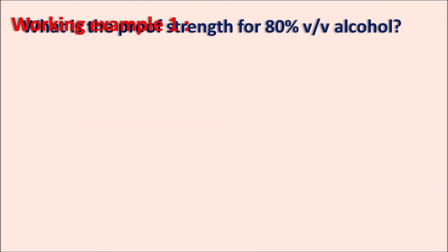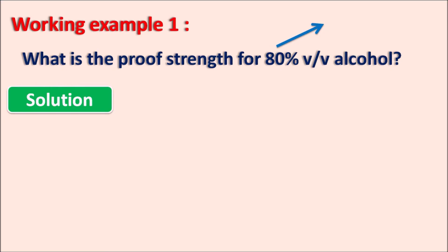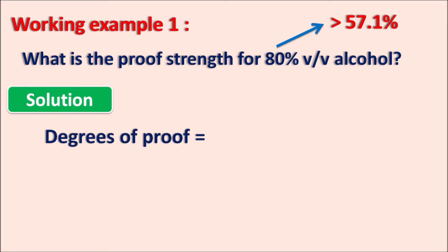Working example 1: What is the proof strength of 80% v/v alcohol? The concentration of the alcohol is given as 80%, meaning 100 ml of the solution contains 80% alcohol. Just by looking at the question, since 80% is greater than 57.1% — which is taken as 100 degrees proof — the solution will be overproof.